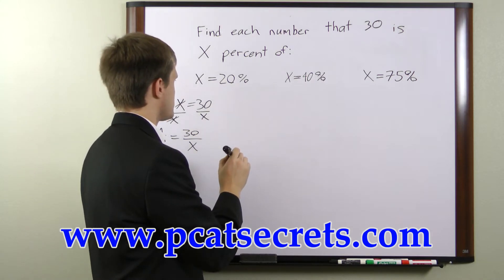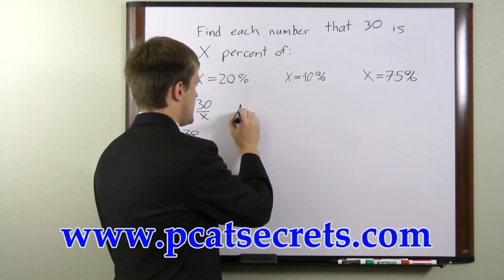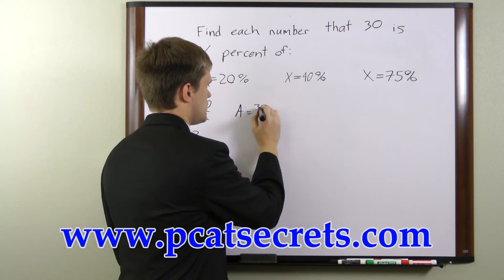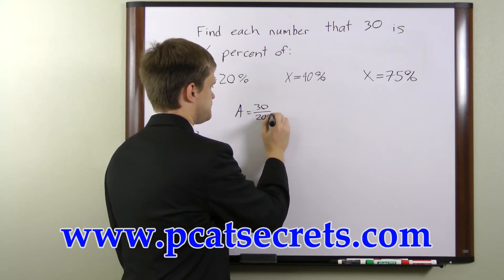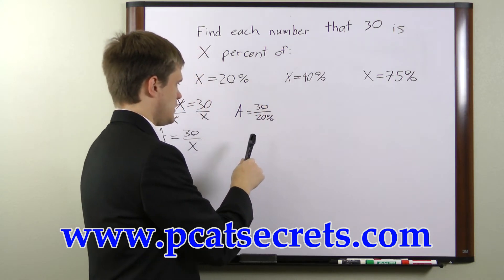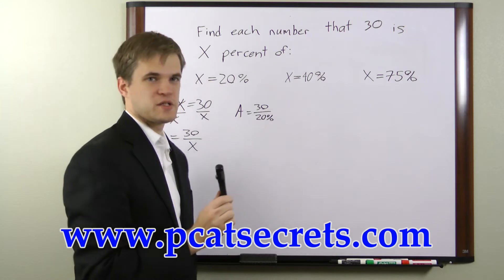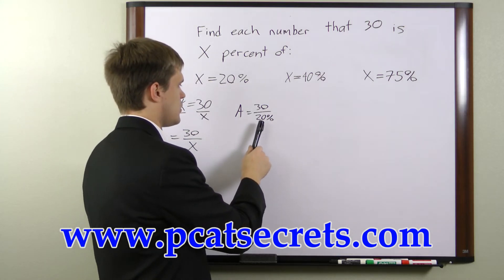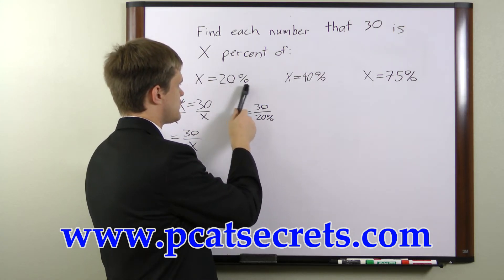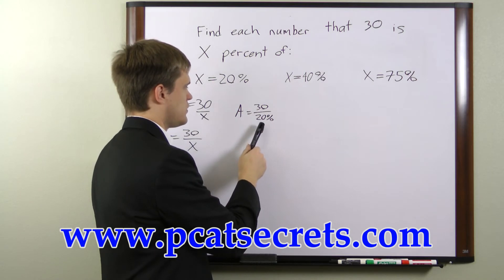For x equals 20 percent, we can say that a equals 30 over 20 percent. Now it's going to be easiest to work with fractions in this case. So the fractional equivalent of 20 percent is 1 over 5.